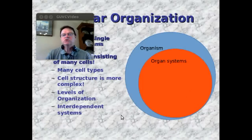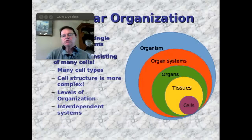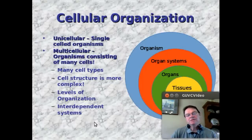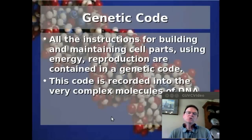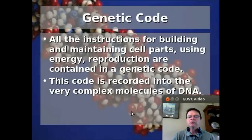Within each organism, there are systems coordinated together to provide specific life functions. Within those, of course, you have organs. Within each organ, you have a variety of different tissue types working together to provide the functions that organ does, and it goes all the way down to the level of the cell. Cells are highly organized things. They also have a genetic code — all the instructions for building and maintaining cell parts, using energy, and reproduction are contained in a genetic code recorded in very complex molecules of DNA.